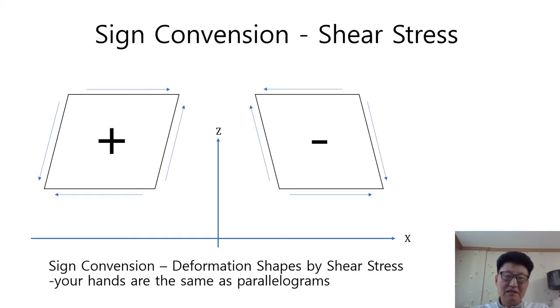In this slide, let's think about the sign convention of shear stress. This picture describes the typical deformation shapes deformed by plus and minus tangential shear stress, respectively. In the previous slide, your hands experience exactly the same stresses described in this picture. In other words, your hands are the same as parallelograms.